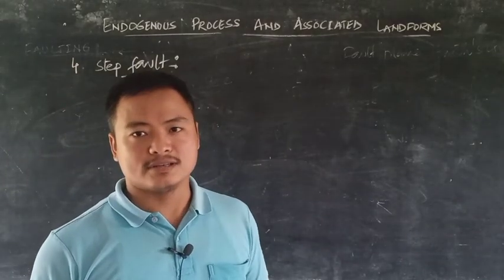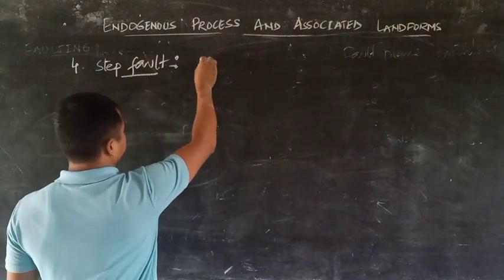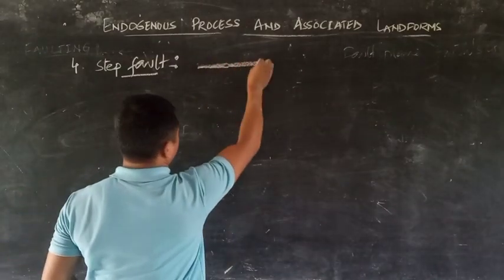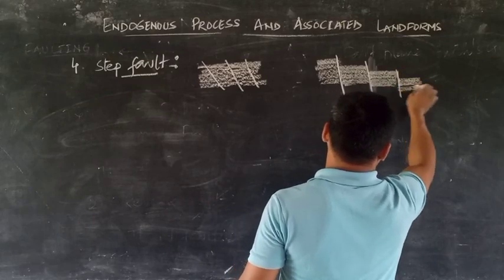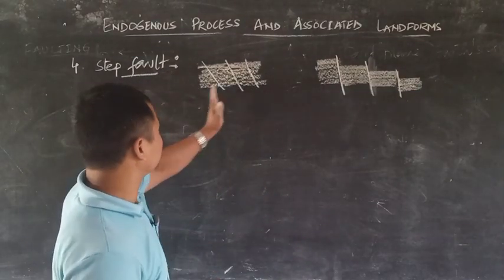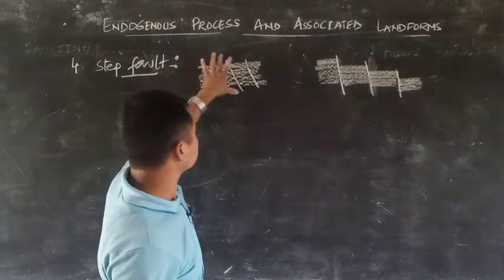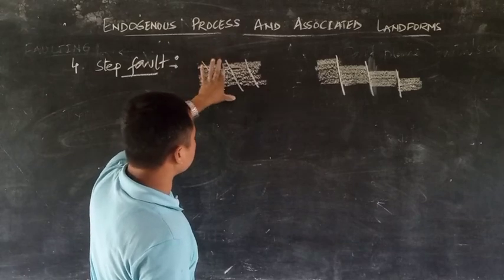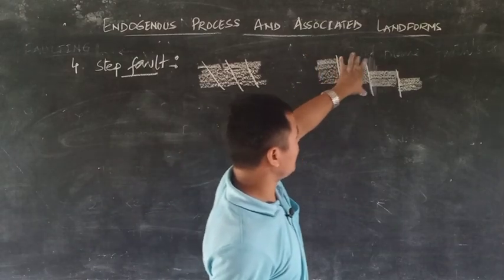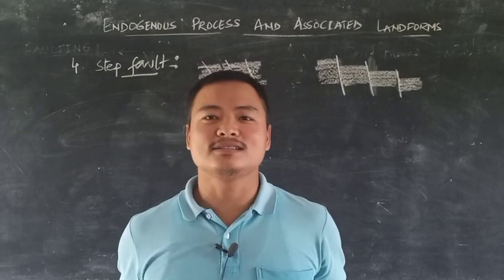The last type of fault is the step fault. The step fault occurs when a series of faults, almost parallel to each other, form on the earth's surface. This series of faults causes one or more of the hanging walls to slip downward, resulting in a step-like structure — and hence it is known as a step fault. Thank you, class, and you all have a good time.